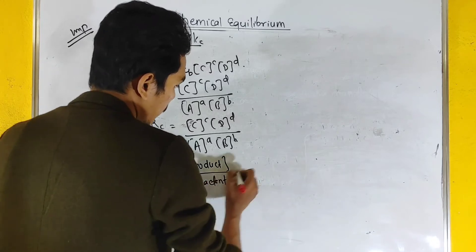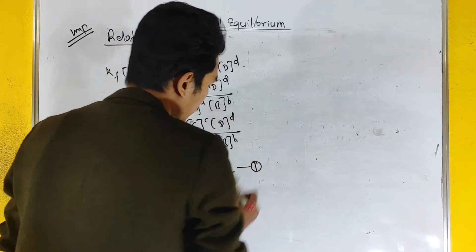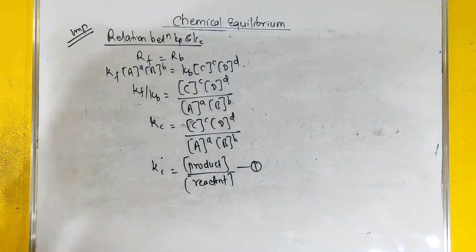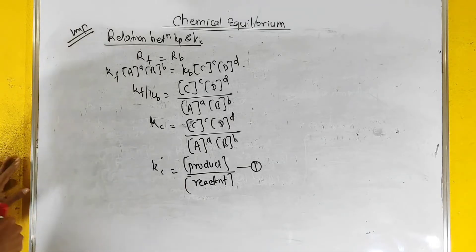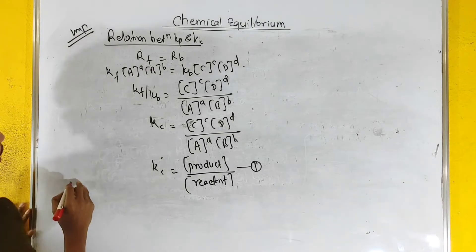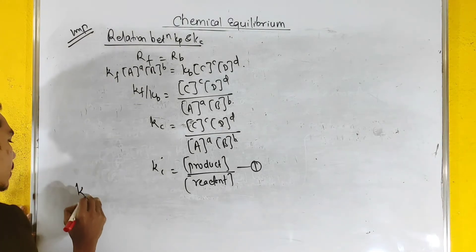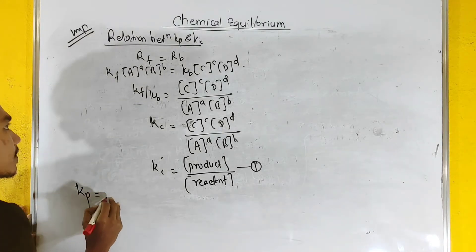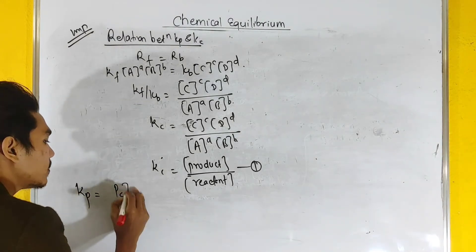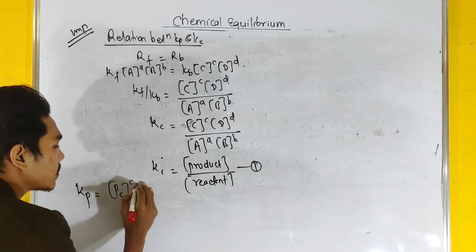Similarly, in partial pressure terms, we express the equilibrium constant as K_p.